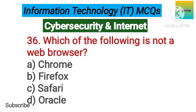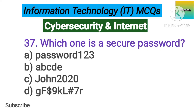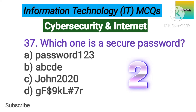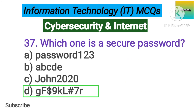Number 37. Which one is a secure password? Option A: Password123. B: ABCDE. C: John2020. D: GF$9L#7R. The correct answer is option D, GF$9L#7R.